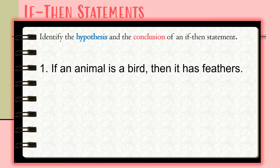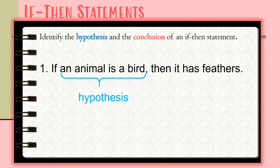Here are the examples. Identify the hypothesis and the conclusion of an if-then statement. For number one, we have the conditional statement: 'If an animal is a bird, then it has feathers.' The hypothesis of this statement is 'an animal is a bird,' and the conclusion is 'it has feathers.'